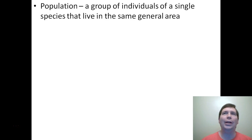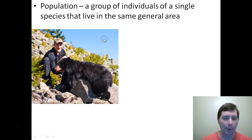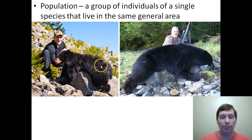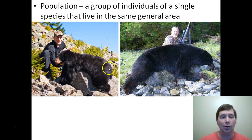Why do we need to do this? Why do we care about populations and groups that live in different areas? Here are two black bears — both the same species of bear. If they weren't dead they could mate and have children together. You can see they're obviously different from each other, and the big thing we've got going on here is size.